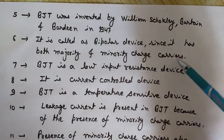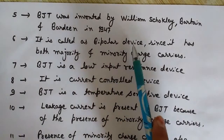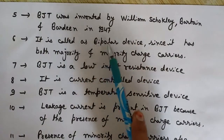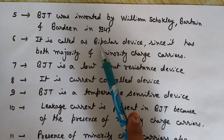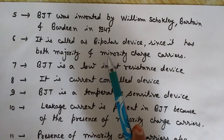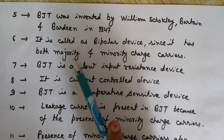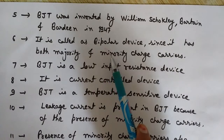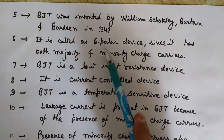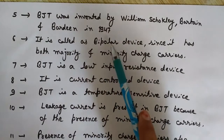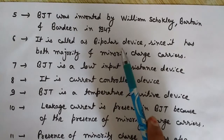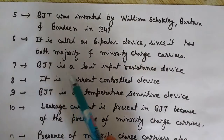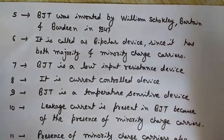BJT is called a bipolar device since it has both majority and minority charge carriers. In NPN transistors the majority charge carriers are electrons and minority are holes, while in PNP transistors the majority charge carriers are holes and electrons are in minority. FETs and MOSFETs are unipolar — they have only majority charge carriers.